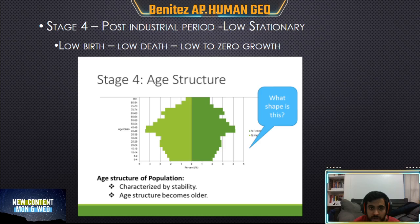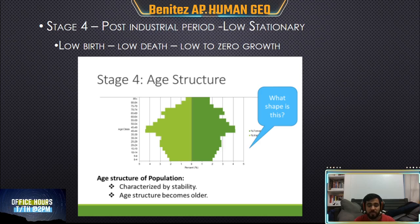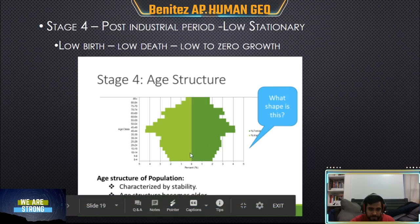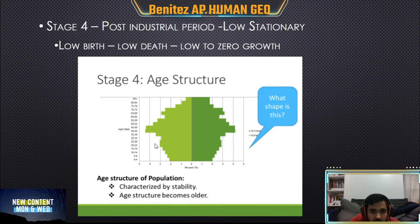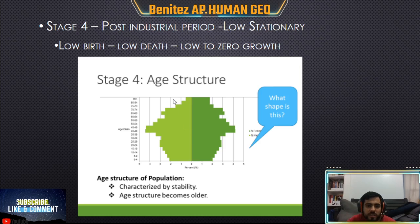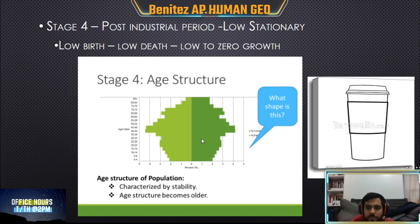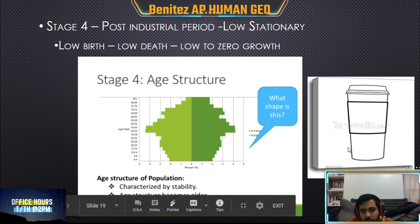Stage four is considered the post-industrial period. Countries are already industrialized and have something going for them — they're more stable, they have more technology and machines, fewer deaths, and actually fewer babies being born. So the population is not growing as much. Looking at the population pyramid for stage four: between ages 0 and 15 there are not many kids, but between ages 40 and 50 we see more adults working. The shape looks like a cup — very thin at the bottom but getting wider toward the top.